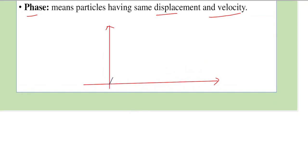To understand phase, let's consider a wave and draw it. Let this be the origin and mark a few points: A0.1, A0.2, A0.3, A0.4, A0.5, A0.6, A0.7, A0.8, A0.9, and A0.10. So we have marked 10 points on the wave.